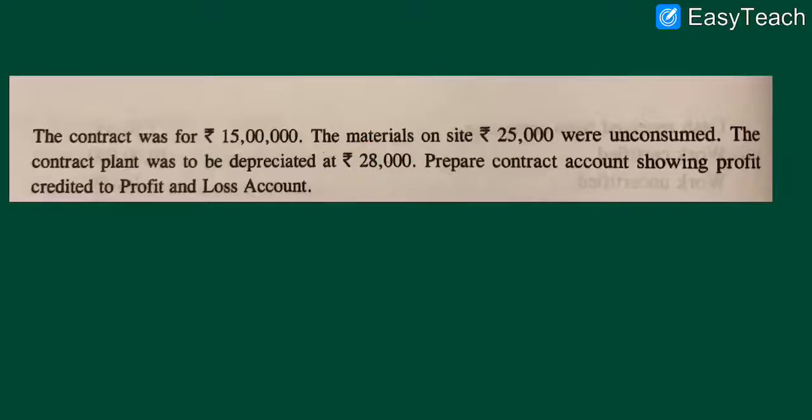The contract plant was to be depreciated at 28,000 rupees. You are asked to prepare the contract account showing the profit to be credited to the profit and loss account.